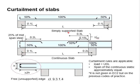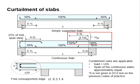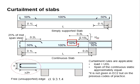Since there will be a hogging moment at the support, anchorage length is to be provided and reinforcement is to be provided at the top of the support as well. Assuming 100% of reinforcement bar is required here, you may reduce the amount by 50%. The positions where curtailment is done can be 0.15L and 0.3L from the surface of the support.